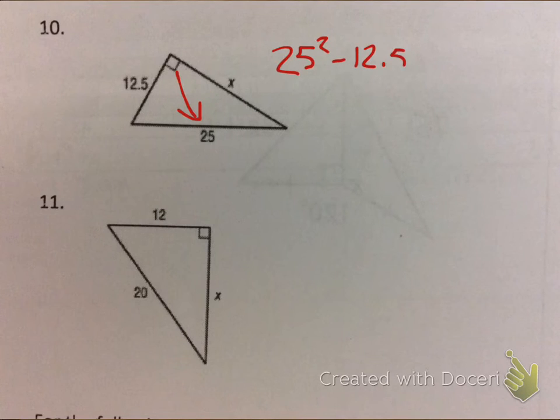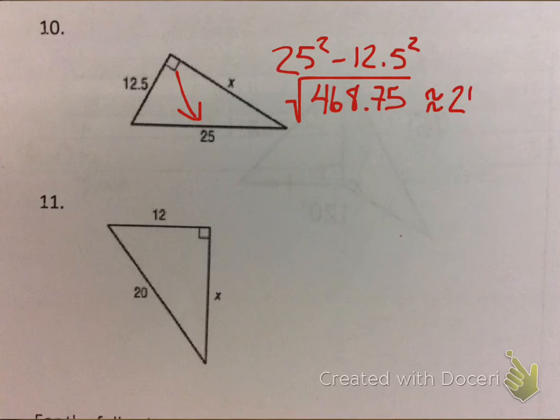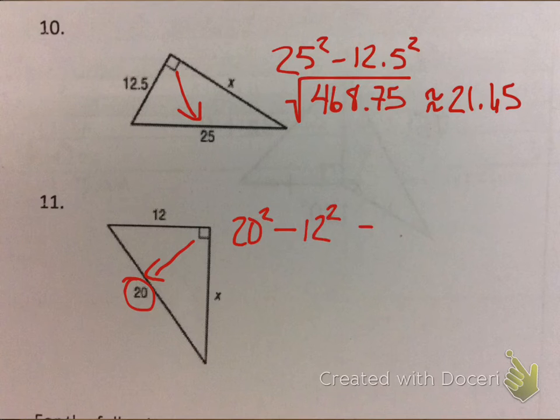Same thing here. Notice, again, I'm drawing across. Make sure I know which one is my c, or what is the angle, what is across the 90 degree angle. If it's a number, you're going to subtract. If it's an x, you're going to add them. Plain and simple. And then the same steps. Do the squaring, add or subtract, and then take the square root.